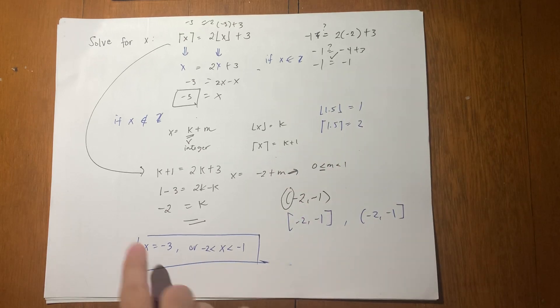So the answer is x equals negative 3 or x is between negative 2 and negative 1. Okay, that's it for this video. For the next videos, I will be solving more complicated expressions involving floor, ceiling, and fractional part. See you, bye-bye.